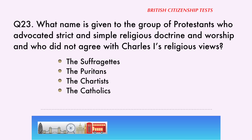Question 23. What name is given to the group of Protestants who advocated strict and simple religious doctrine and worship and who did not agree with Charles I's religious views? The suffragettes, the Puritans, the Chartists, the Catholics. The correct answer is... The Puritans.